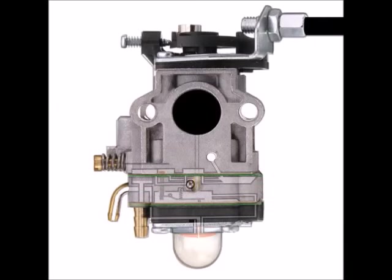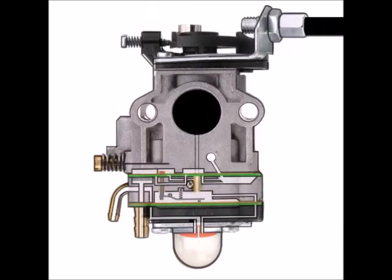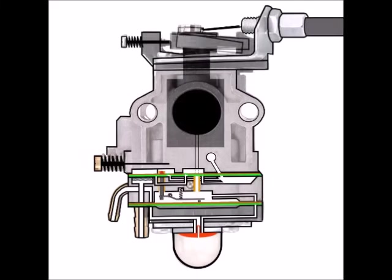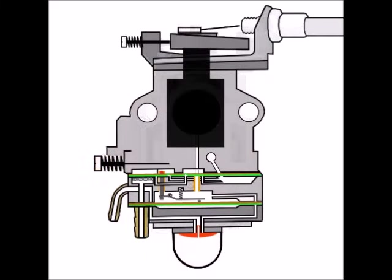Now let's imagine we've got x-ray vision and we could see through the carb body. It would look something like this. Now let me simplify this drawing even more so it's more like a schematic diagram.